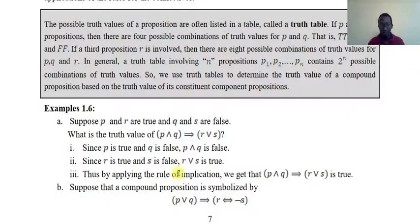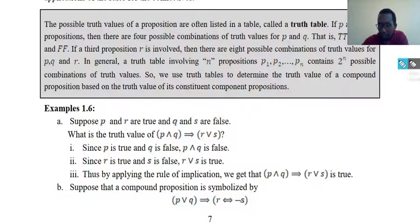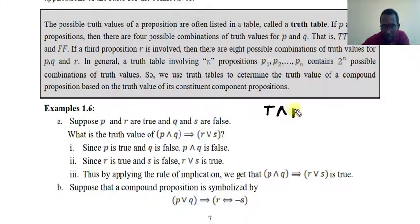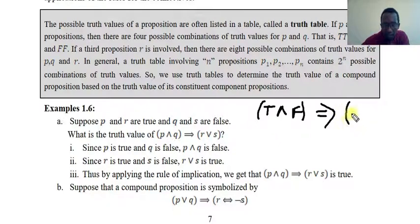What is the truth value of P and Q and R or S? This is P and R is true, Q and S is false, P is true, and Q is false.